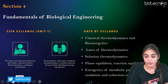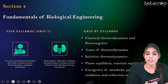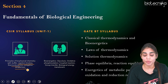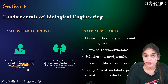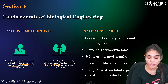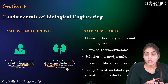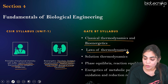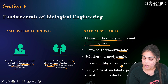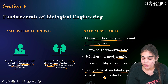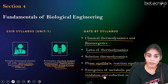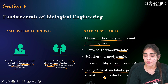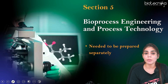Now let's come to Section 4, Fundamentals of Biological Engineering. The CSIR syllabus has topics like pH, buffer, reaction kinetics, thermodynamics, and colligative properties, along with the metabolism of carbohydrates such as glycolysis, oxidative phosphorylation, coupled reactions, group transfer, and biological energy transducers. These are all equivalent to GATE Biotechnology topics like classical thermodynamics and bioenergetics, laws of thermodynamics, solution thermodynamics, phase equilibria and reaction equilibria, and energetics of metabolic pathways including oxidation and reduction reactions.